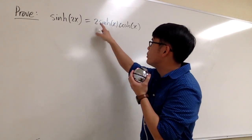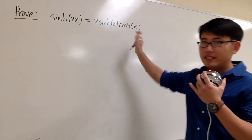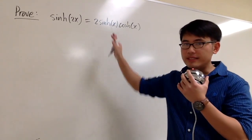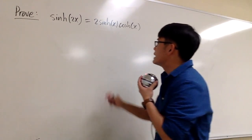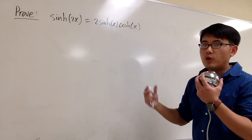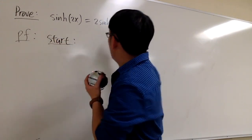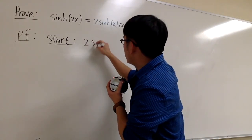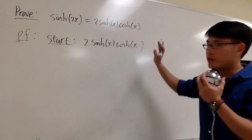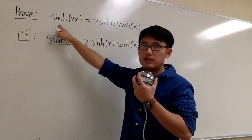sinh(2x) is equal to 2 times sinh x times cosh x — very similar to regular trigonometry. Remember, sinh and cosh are combinations of exponential functions, so when proving identities you should translate them back to the e to the x world. The left-hand side has fewer things to work with, so the proof will start on the right-hand side, where it's actually easier when you have more things.